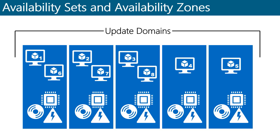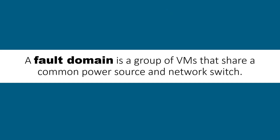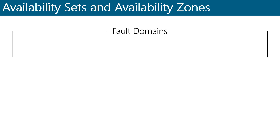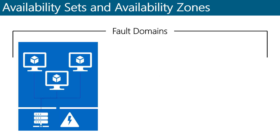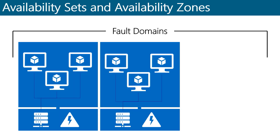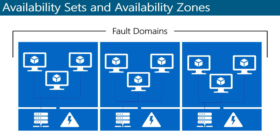During planned maintenance, one update domain is rebooted at a time, and when an update domain is rebooted, it's given 30 minutes to recover before maintenance is initiated on the next update domain. A fault domain is a group of VMs that share a common power source and network switch. By default, VMs added to an availability set are split out across as many as three fault domains in Resource Manager deployments, or two fault domains in classic deployments.